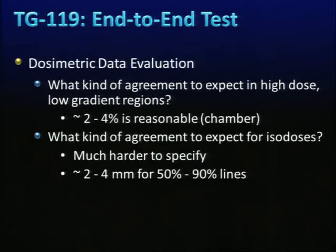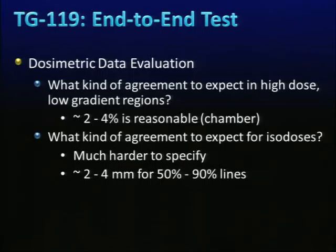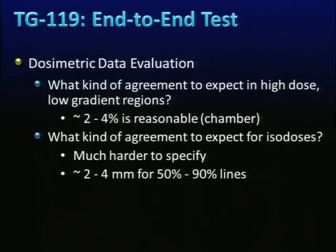For evaluating end-to-end test results, in high-dose, low-gradient regions, a 2–4% dose difference with the chamber is reasonable. TG-119 recommends the 50% to 90% isodose line should show 2–4 mm agreement. TG-119 provides mock cases including head and neck, prostate, and spine, which can be used directly or adapted; IMRT and VMAT-specific cases can also be added.